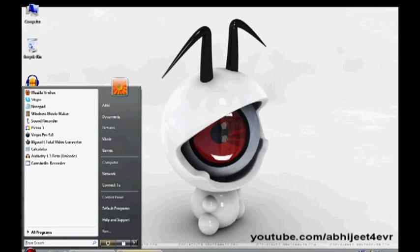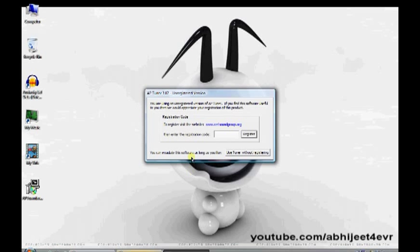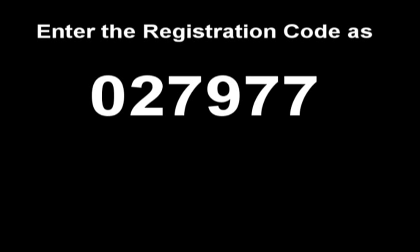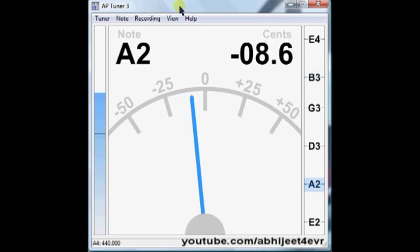Now go to the start bar, click all programs and aptuner 3.08. Open the tuner and you'll be asked to enter registration code. And your tuner is ready. Once you're in you can find a whole lot of features inside this tuner.